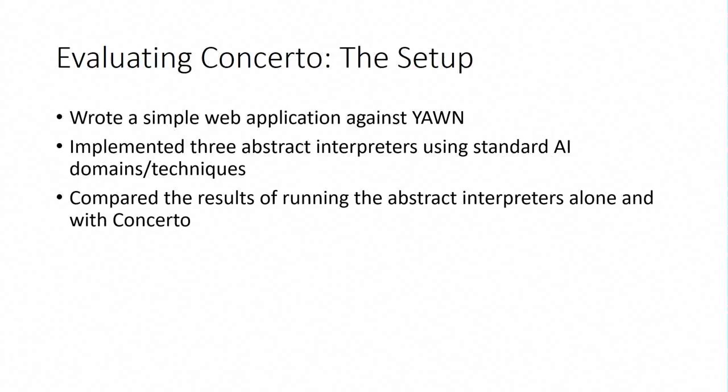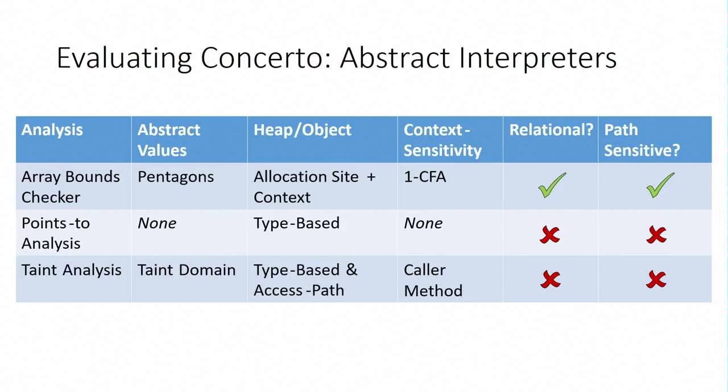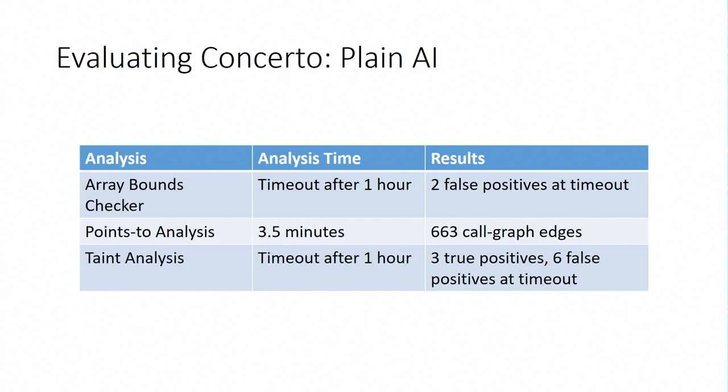Then we wrote a simple application against it that responds to certain requests, comes up with answers, returns those answers. And then we wrote three different abstract interpretations all within Concerto. Compare the results of just running the abstract interpretation over all the code versus using mostly concrete interpretation for the framework side. Three analyses of different flavors that kind of show that what we're doing isn't specialized to one kind of static analysis. All different kinds of abstract values. Yes, we can go context-sensitive. Yes, we can handle access paths. Yes, we can be relational. Yes, we can be path-sensitive. This really does work.